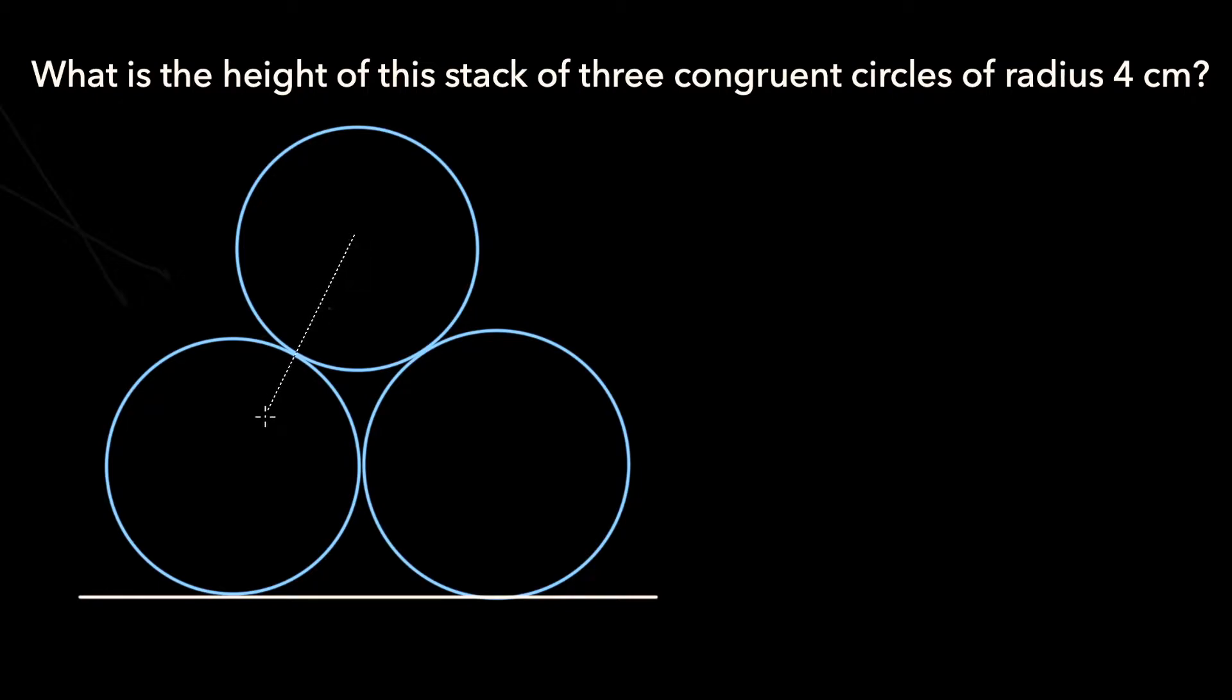To begin, let's connect the centers of each of these circles to form a triangle. Notice that each of the sides of this triangle are composed of two individual radii. For example, if you consider this side right here, it's composed of this radius as well as this radius, as is the case with the other two sides. This means that the triangle is equilateral since all of the sides are of length 2r.